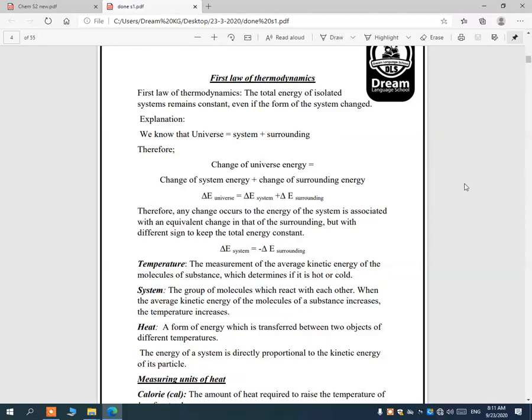But with different sign to keep the total energy constant. That means the change in energy for the system equals negative the change of energy in the surroundings. Don't forget the negative sign here means the change in energy for the system and the surroundings are equal but the difference is in the sign, and the sign is the direction of the heat.